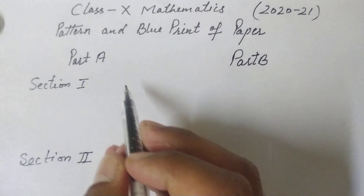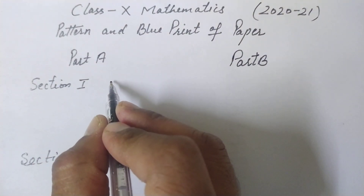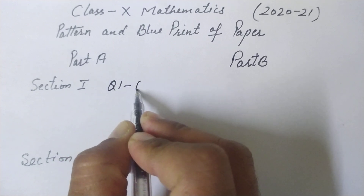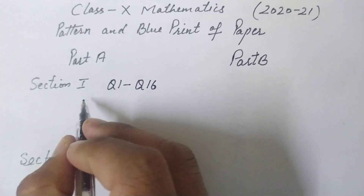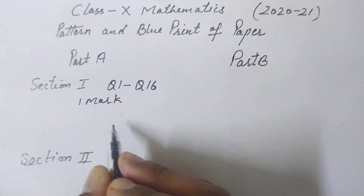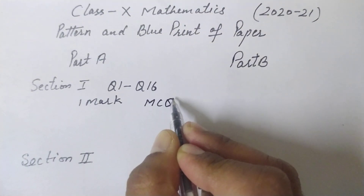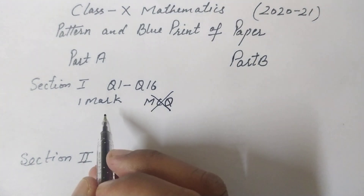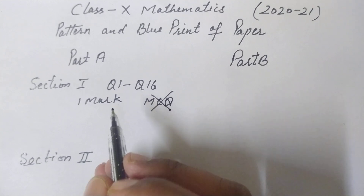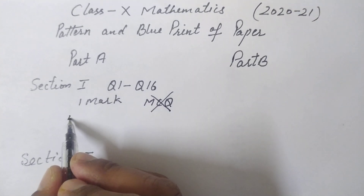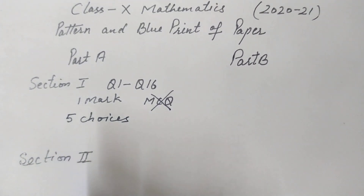In Section 1, there will be questions 1 to 16 — that is 16 questions — and these are all one mark each. There will be no MCQ (multiple choice questions); just one-mark questions where you write your solution.